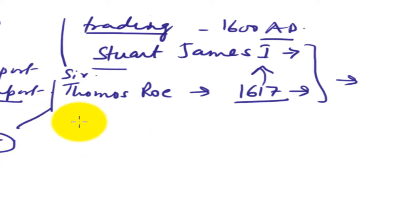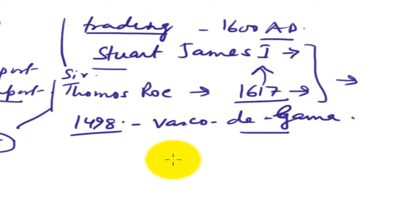At that time, you are very much aware that in 1498 Vasco de Gama, Portuguese, came to India at the bank of Calicut. And he was the first who had started business with the Indians.